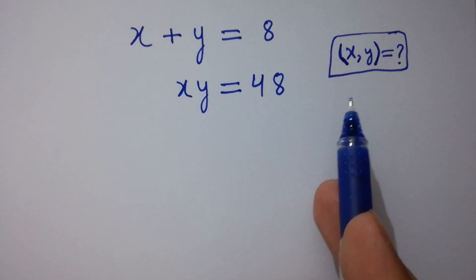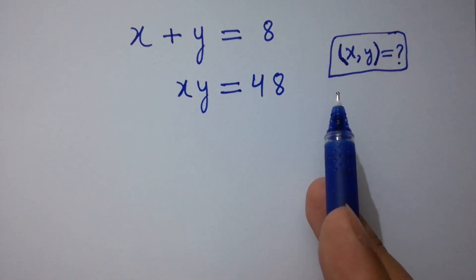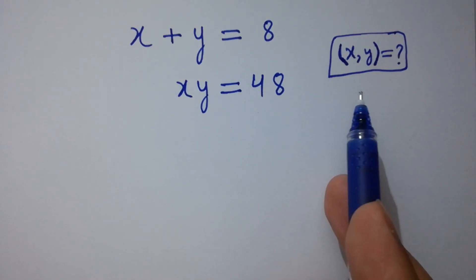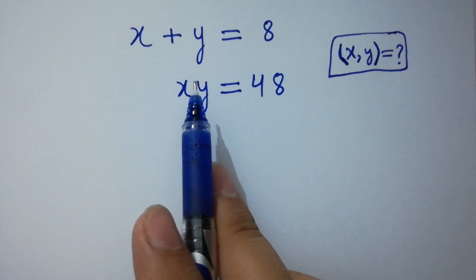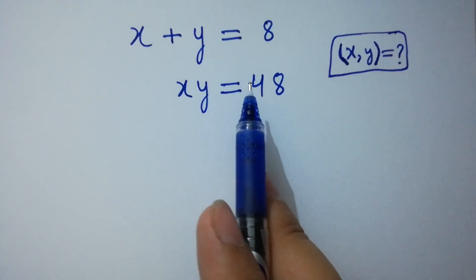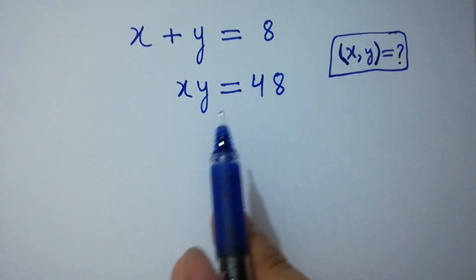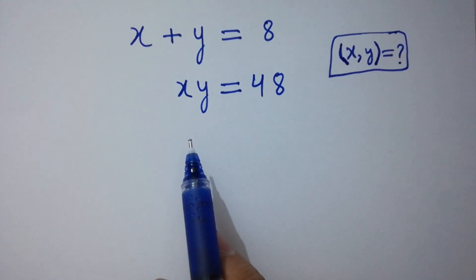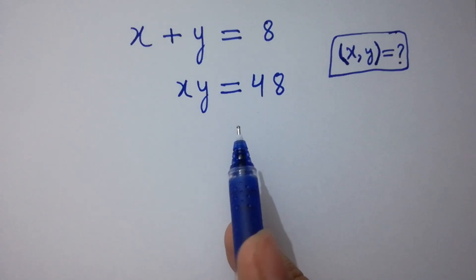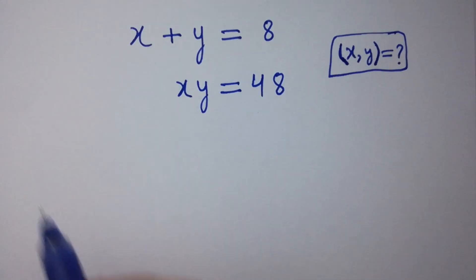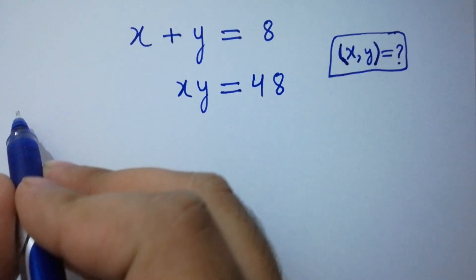Hello friends. Find the value of x and y if x plus y equals 8 and x times y equals 48. Let's have a solution.